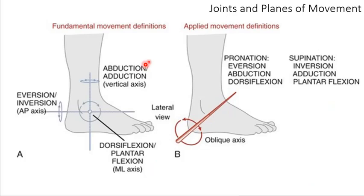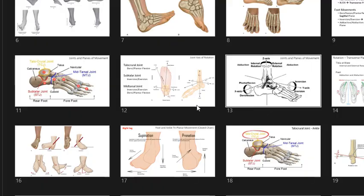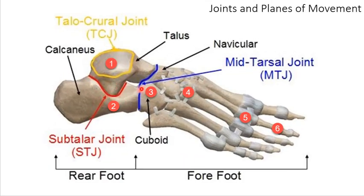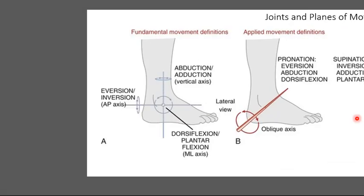It gets confusing trying to figure out abduction or adduction, eversion or inversion, or plantarflexion and dorsiflexion. That's why the terminology of pronation and supination has become more widespread — it indicates what's happening without trying to isolate each component. Instead of figuring out whether it's the talocrural joint or subtalar joint or midtarsal joint, the answer is it's all three. It's very hard to isolate those three individual motions. Unless you're clinically assessing it, it just doesn't happen in nature.